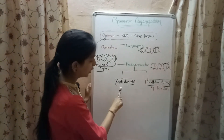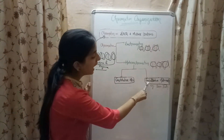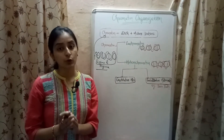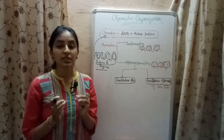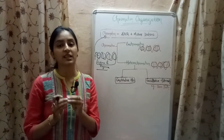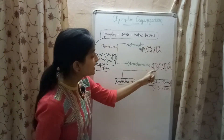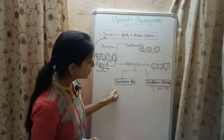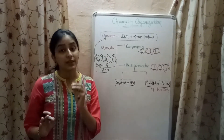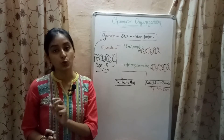Heterochromatin is of two types: constitutive heterochromatin and facultative heterochromatin. Constitutive heterochromatin is always present in the condensed state and the DNA inside is always silenced — meaning the DNA cannot be transcribed into RNA.